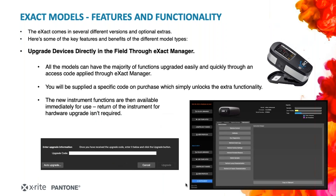Finally, in this webinar series, all of the models — basic, basic plus, standard through to the advanced and the scan functionality — can all be upgraded directly in the field, depending on the serial number of your device. The upgrade is a simple process on purchase: you would simply get an access code emailed to you from our orders department. You go into exact manager, into the instrument configuration, and there's an option to enter the code that unlocks the functionality of your device. The device doesn't need to come back for hardware service or physical upgrade — it can all be done in the field very easily.